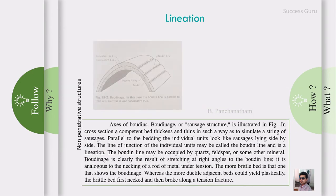The last non-penetrative structure is the axis of boudins - boudinage or sausage structure. You can see here there are two types of rock - incompetent rock as well as competent rock. When stress is applied to these rocks, the incompetent rock tries to bend whereas the competent rock will not bend and tries to break. This forms the sausage or boudinage structure. The cross section of the competent bed thickens and thins in a way similar to stretching of a sausage. Parallel to the bedding, individual units lie like sausages side by side. The line of junction of the individual units may be called the boudin line and is a lineation.